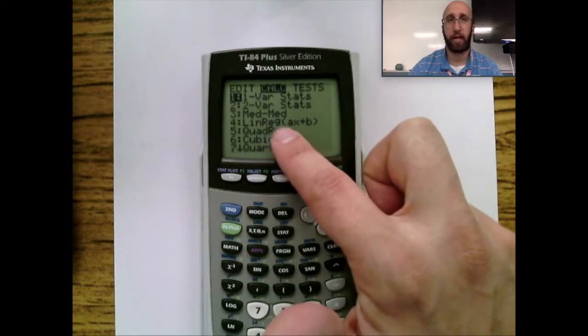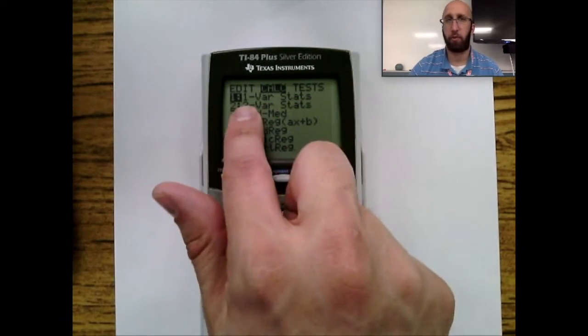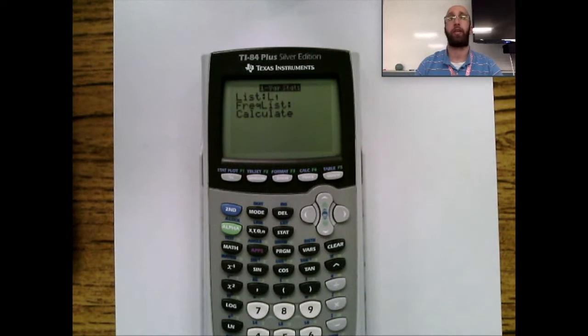So once we have data in there, what can we do with it? We have this Calc tab. We have One Variable Stats that is important to us. I'll talk about some of the regression tools at the bottom. So One Variable Stats is going to take a data set. It can give you the mean, it can give you the standard deviation.